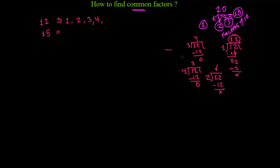I try 5, but 5 cannot divide 12 — from divisibility rules, only numbers ending in 0 or 5 are divisible by 5, and 12 ends in 2. So I try 6: 6 times 2 equals 12, remainder 0 — so 6 is a factor. 7 is not a factor since 7 times 2 is 14. 8 is not a factor either. Finally, 12 itself: 12 times 1 equals 12, remainder 0. So the factors of 12 are 1, 2, 3, 4, 6, and 12.